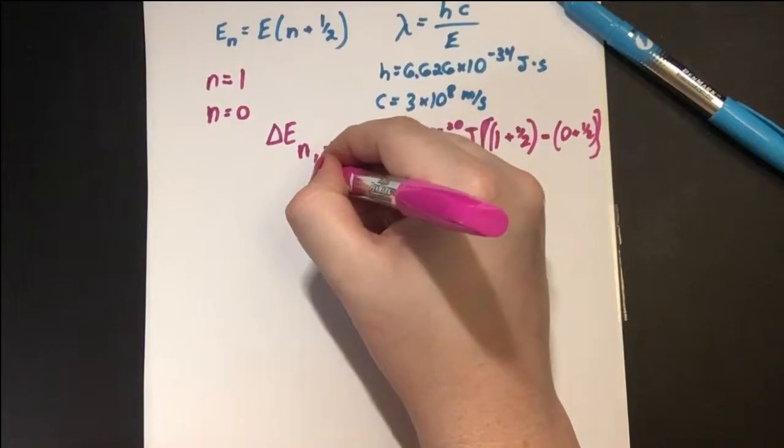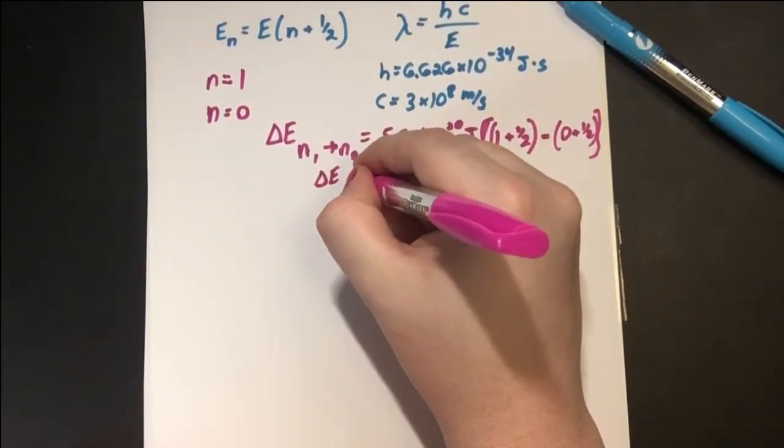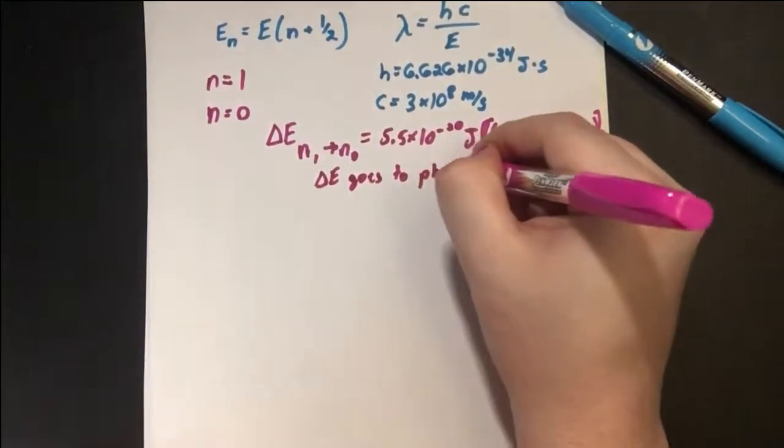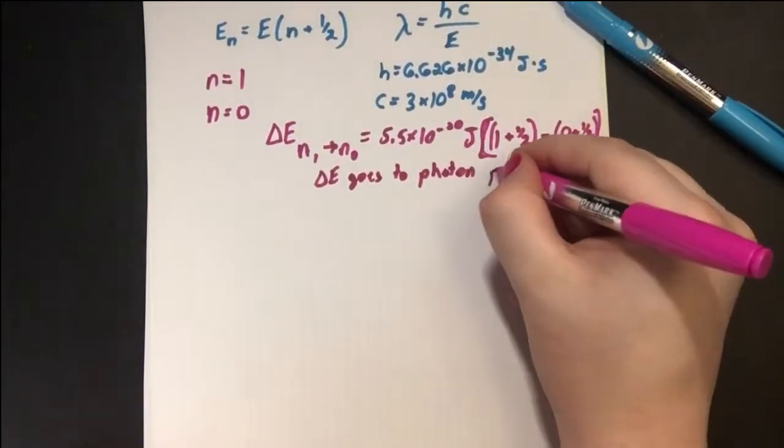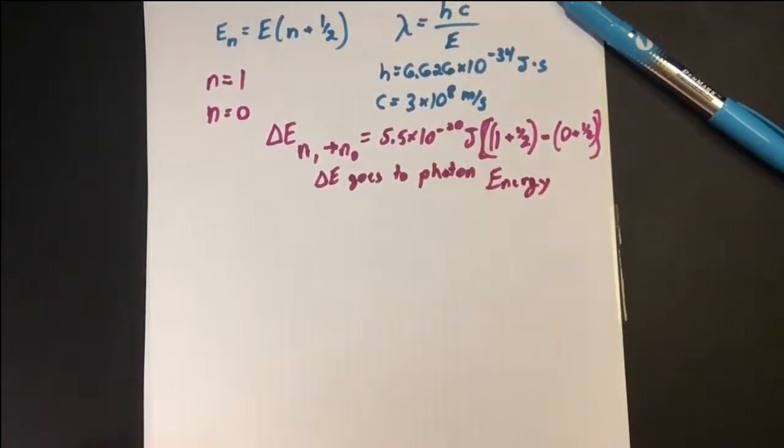So where does that energy go? That energy, that ΔE, that change in energy, has to go somewhere, and it goes to the photon. And that's the E we're looking for. That's the energy.